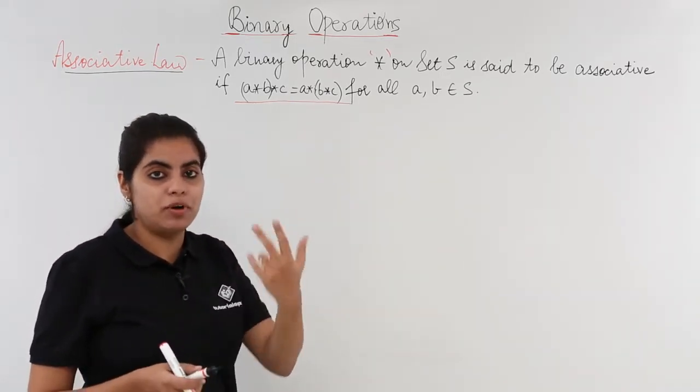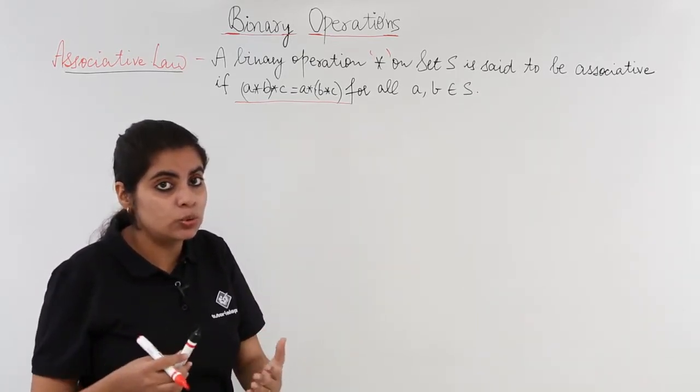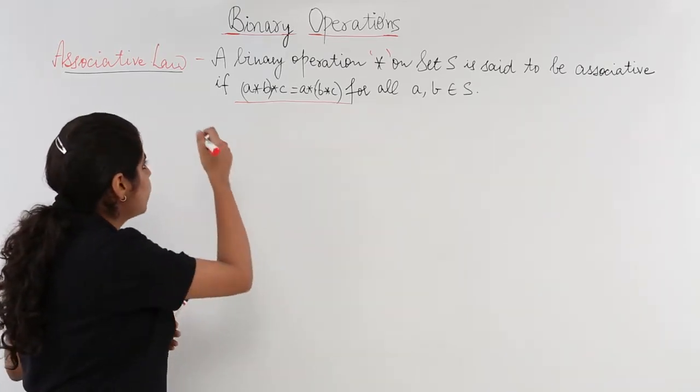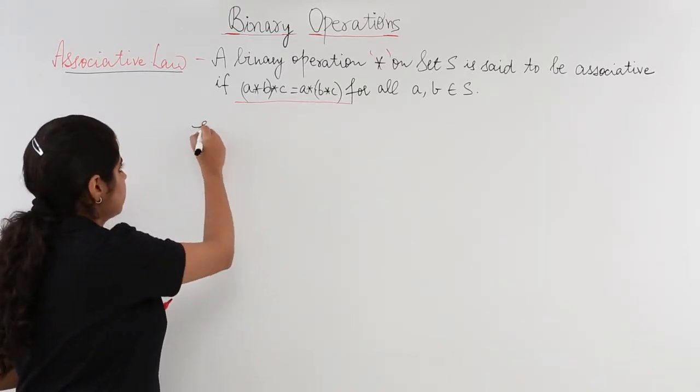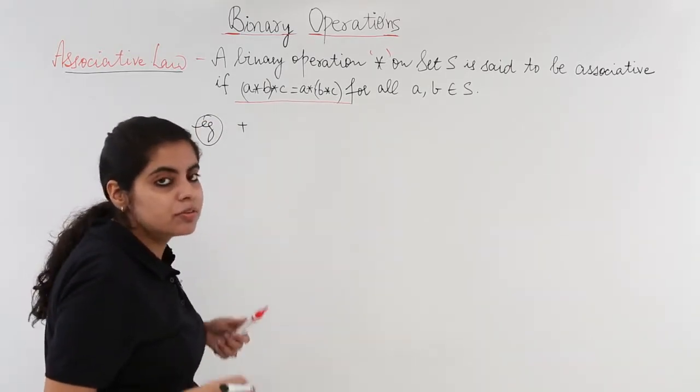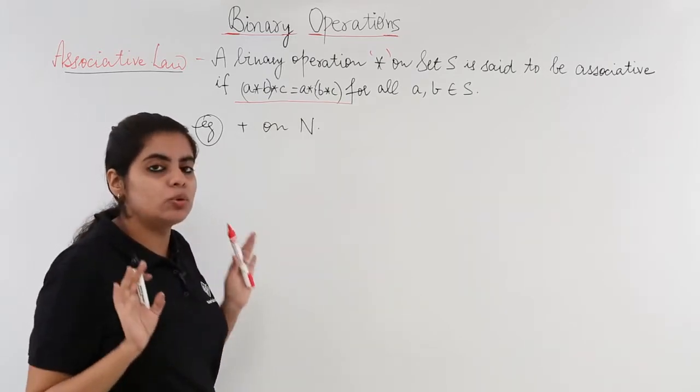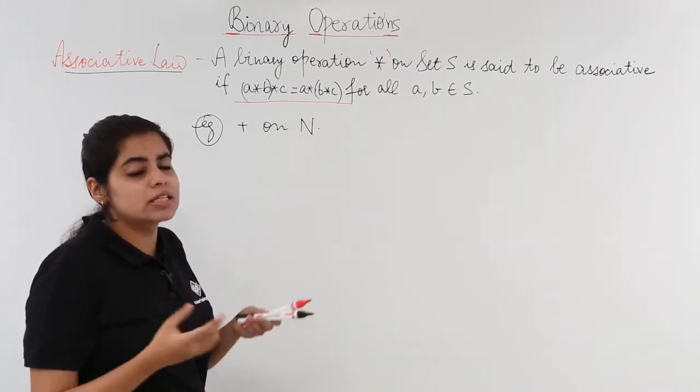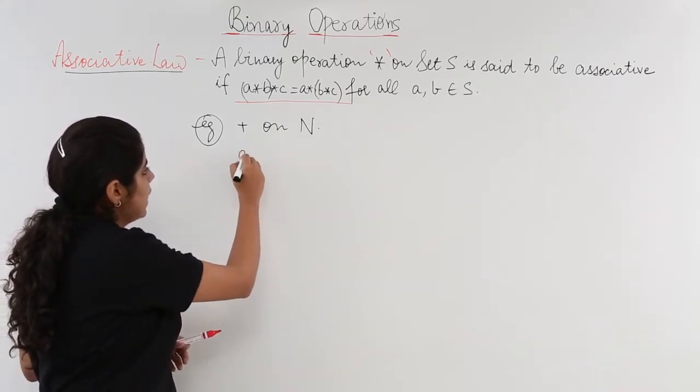If you take one and two first and then the third element, things may change to something else. Let's see some examples as to when things would be associative and when these would not be associative.